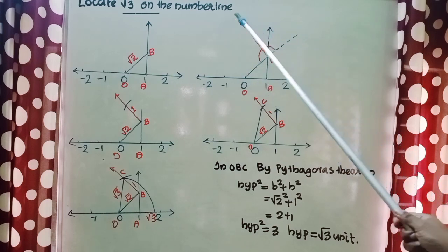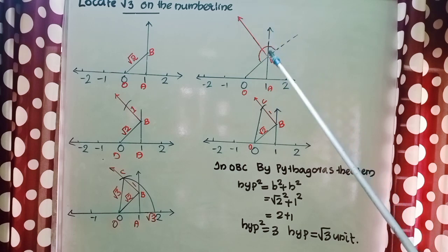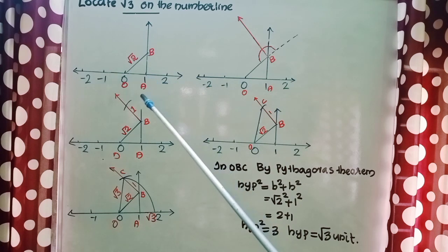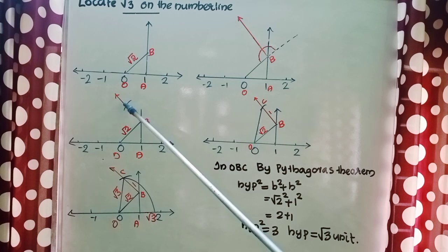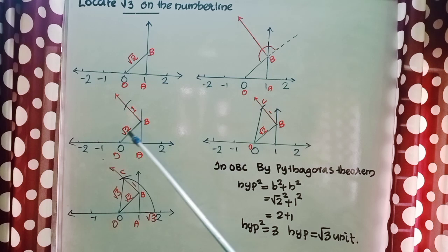Then draw the perpendicular line from the point B. Then you take 1 unit distance and mark 1 unit distance and draw the arc there.